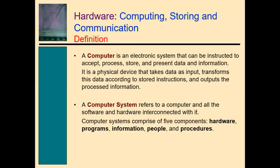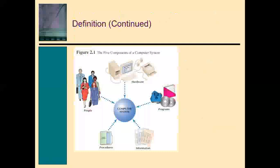When we say computer system, we are referring to a computer and all the software interconnected with it. A computer system is comprised of five components: hardware, programs, information, people, and procedures. The two major components are hardware and programs, while information, people, and procedures are supplementary components.